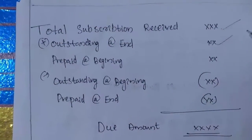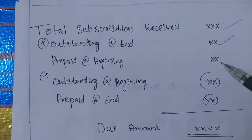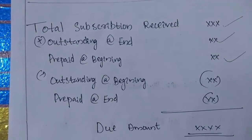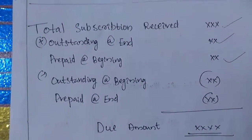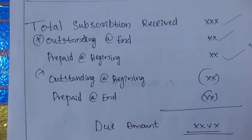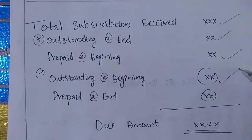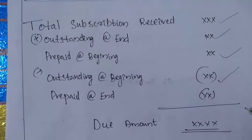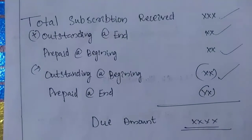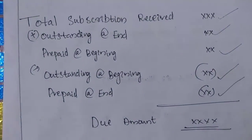We will get the time of this. It will be prepared at the beginning, so this current amount will be added back. Outstanding at the beginning — this is the opening at the beginning. That will be treated in the time of this year. It will be less. Prepaid at the end — prepaid at the end of this year is prepaid, so that is the current year. So we will get the due amount.